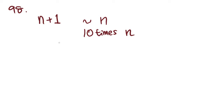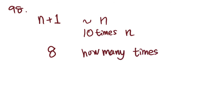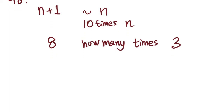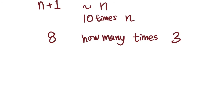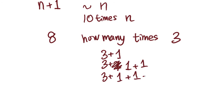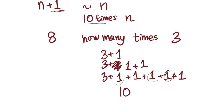They say the intensity corresponding to a reading of 8 is how many times that of a reading of 3. The way to think about this is: 8 is 3 plus 5. So 8 would be 3 plus 1 plus 1 plus 1 plus 1 plus 1 — there are 5 ones. We know that every time n is added to 1, it's multiplied by 10, so adding 5 ones means multiplying by 10 five times. That's answer choice C.